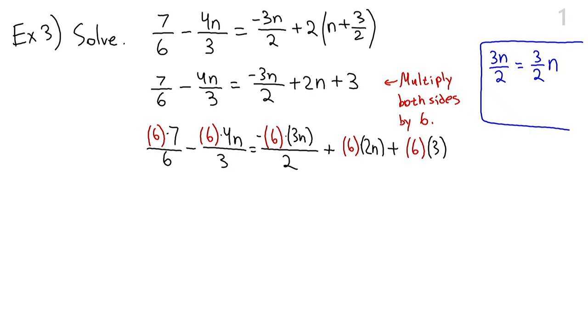Now we're ready to simplify. 6 times 7, the 6s cancel. We get 7. 6 divided by 3 is 2. 2 times 4n is 8n. There's a minus out front here. Now, don't forget that minus. 6 divided by 2 is 3. So we have 3 times negative 3n, which is minus 9n. Here we have 12n plus 18. And again, we combine the like terms. On the right-hand side, minus 9n plus 12n is 3n. And now we put things on different sides. So we can subtract 3n from both sides and we get 7 minus 11n equals 18.